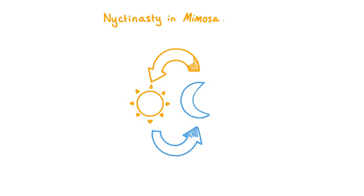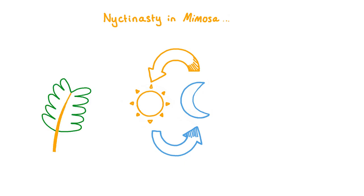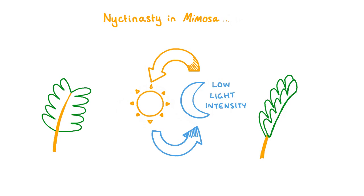Mimosa and several other plant species can also move their leaves in light-dark cycles by responding to light intensity. For example, while mimosa leaflets are open during the day, the leaflets close at night. Photoreceptors which are sensitive to light detect the low light intensity as night approaches and generate an electrical signal which causes the leaflets to close. In the daytime, the photoreceptors sense the increase in light intensity and trigger the leaflets to return to their open position. This type of movement is called nyctinasty, or sleep movement — the prefix 'nyct' means night.